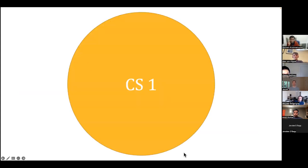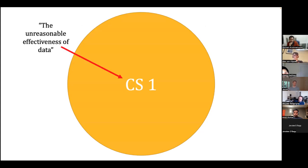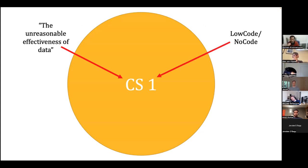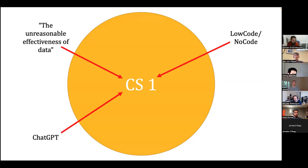Meanwhile, if you look at the context in which CS1 lives, there are forces attacking it from outside. There's the phrase 'the unreasonable effectiveness of data' — how does that play into CS1? Some people say CS1 should teach web programming, but low-code/no-code systems do an amazing amount without any programming at all. So what does that do to your CS1?